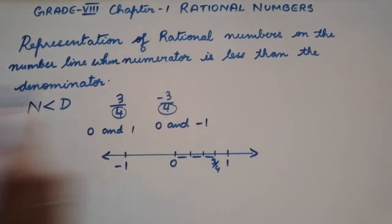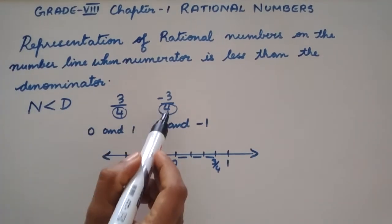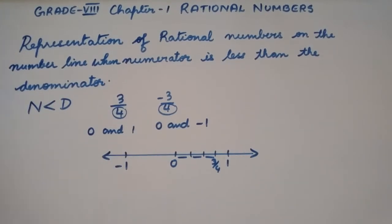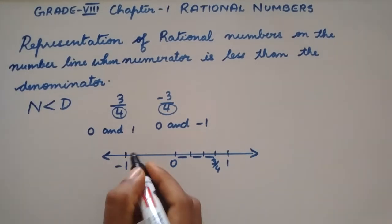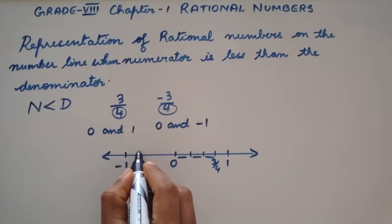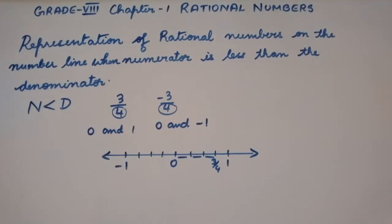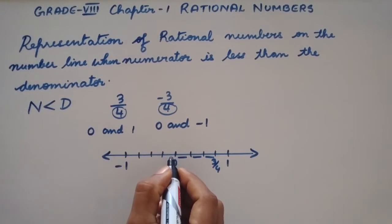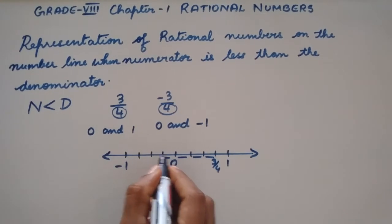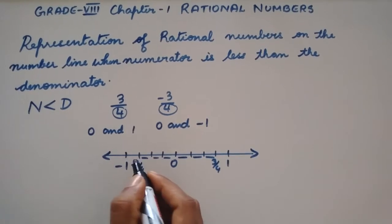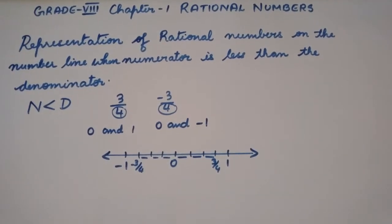Now let us plot minus 3 by 4. Since 3 is less than 4 and the rational number is negative, we know that minus 3 by 4 will come between 0 and minus 1. So we divide this length into 4 equal parts. As the denominator is 4, we mark minus 3 by 4 that is 3 parts away from 0. So this is minus 3 by 4.